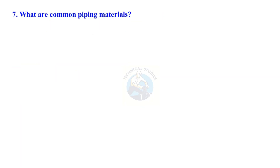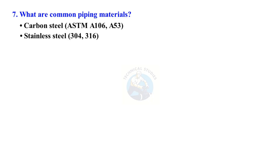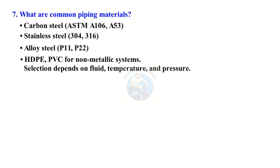What are common piping materials? Carbon steel (ASTM A106, A53), stainless steel (304, 316), alloy steel (P11, P22), and HDPE or PVC for non-metallic systems. Selection depends on the fluid, temperature, and pressure.